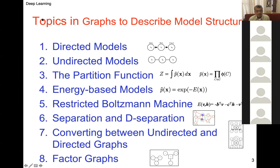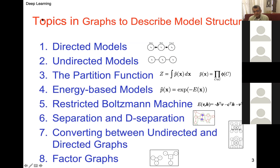Today's lecture covers directed models — illustrated with the example of Alice, Bob, and Carol in a relay race, where there is directionality, direct causality, and indirect causality. We also look at undirected models, where there are no arrows between nodes, just relationships — illustrated with a disease example involving you, a colleague, and a roommate, modeled by a Markov random field.